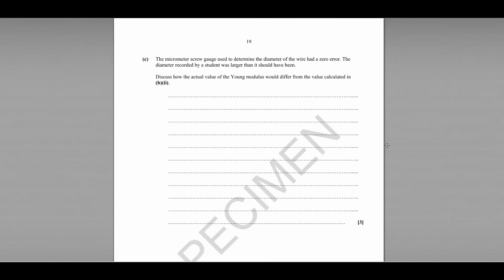Finally, part C explains that the micrometer screw gauge used to determine the diameter of the wire had a zero error. What this means is there's a systematic error, an offset between the actual value and the measured value. The diameter recorded by the student was larger than it should have been, so the actual value was smaller.